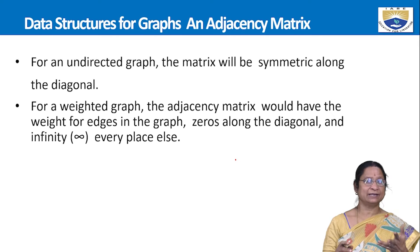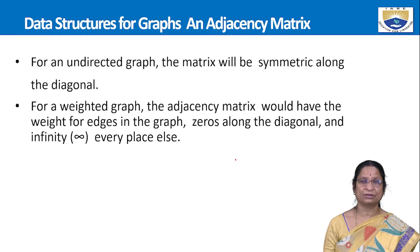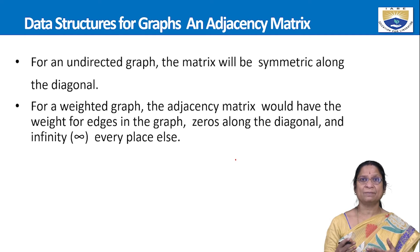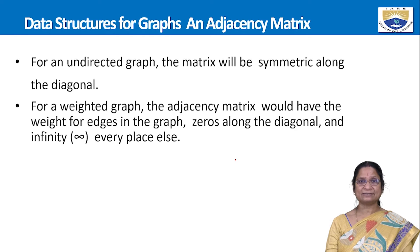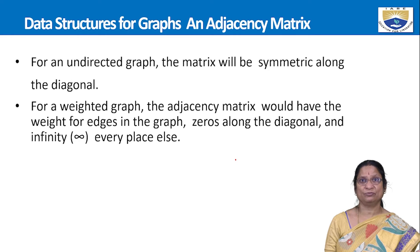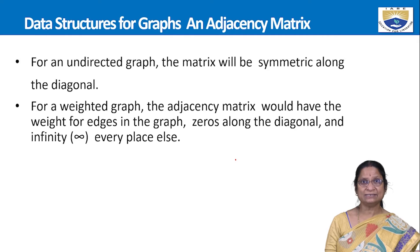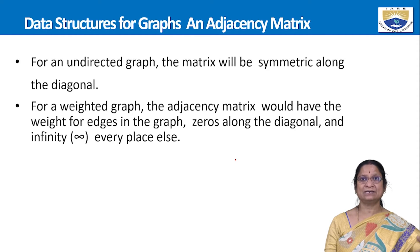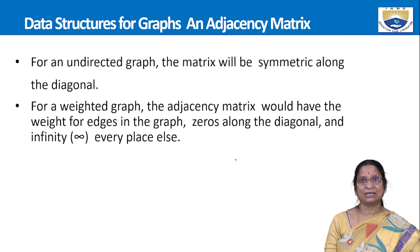In an undirected graph the adjacency matrix will be symmetric, whereas in a directed graph it need not be symmetric. If the graph is a weighted graph — meaning each edge has some weight — then instead of representing 1, we store the corresponding edge weight value in the matrix.